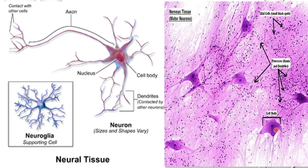In the microscopic image, the neurons can be seen with the cell body and processes — axons and dendrites — showing how they are interconnected. The dark spots are the glial or neuroglial cells, which help in transmission of impulses and in supporting and protecting the neurons. The function of neural tissue is to transmit electrical impulses throughout the neuron. How these impulses are transmitted will be discussed in a separate upcoming lecture.